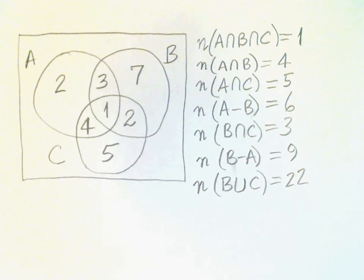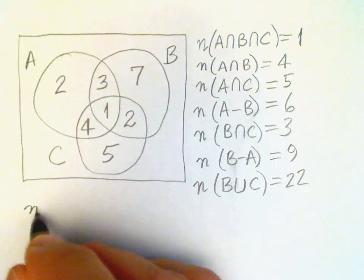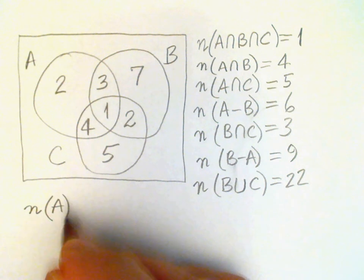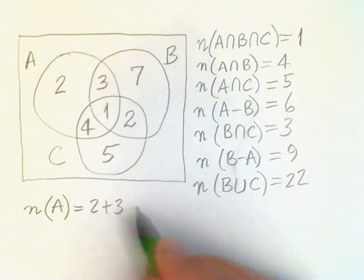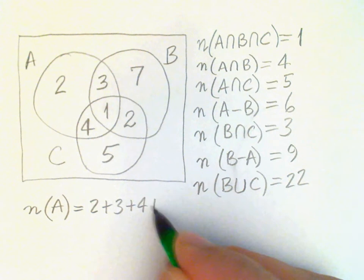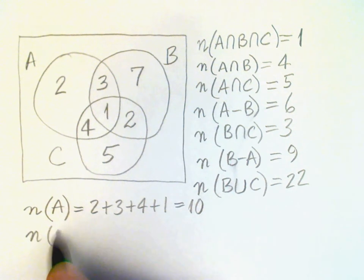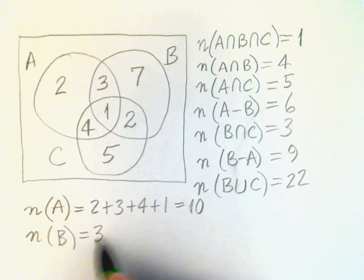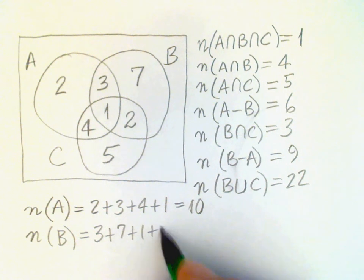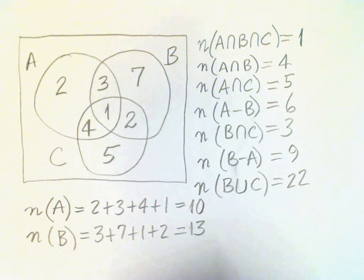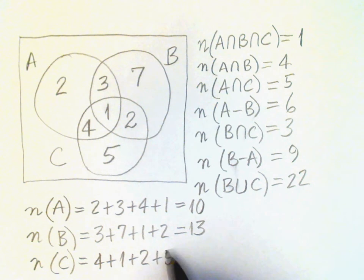So now we've completed the analysis. It just remains to count up the number of elements in each of the sets A, B, and C. Okay, so for A, we have 2 plus 3 plus 4 plus 1. That's 10. For B, we have 3 plus 7 plus 1 plus 2. That's 13. And for C, we have 4 plus 1 plus 2 plus 5. That's 12.